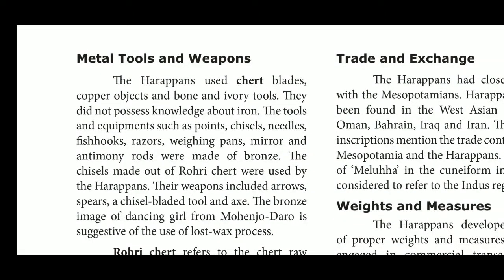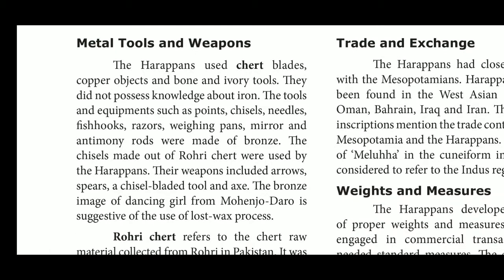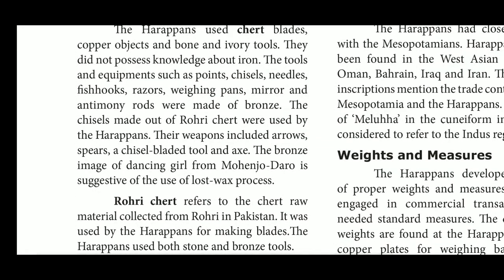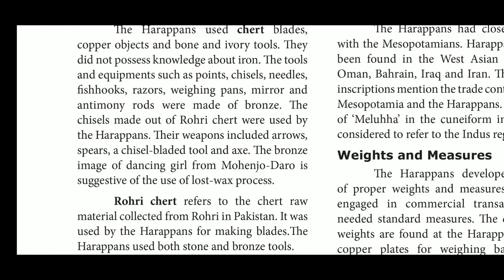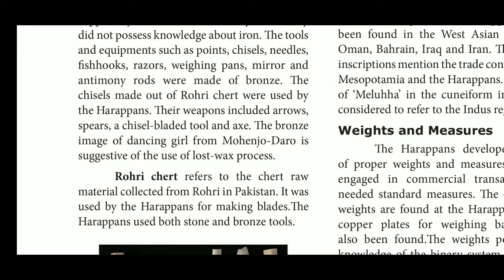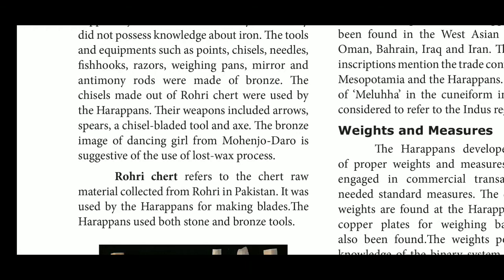Regarding metal tools and weapons, the Harappans used chert blades, copper objects, and bone and ivory tools. They did not possess knowledge about iron. The tools and equipment such as points, chisels, needles, fish hooks, razors, weighing pans, mirrors, and antimony rods were made of copper or bronze. Chisels made out of Rohri chert were used by the Harappans.